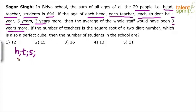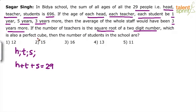According to the question, there are 29 people. So H plus T plus S equals 29. Now, look at the last part first: the number of teachers is the square root of a 2-digit number. What are the perfect squares which are 2-digit numbers? Starting from 16 — you cannot consider 1, 4, 9 as those are single-digit numbers.